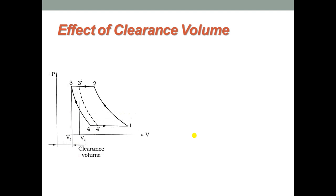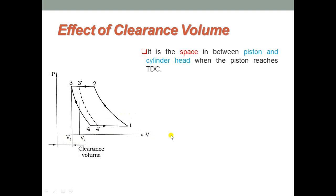To start with, we will discuss the effect of clearance volume using a P-V diagram. There is a clearance volume represented as V3, and another clearance volume represented as V3 dash. Clearance volume is the space between the piston and the cylinder head when the piston reaches TDC. That space is called the clearance volume.